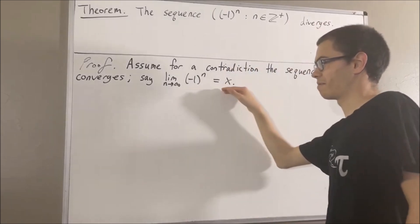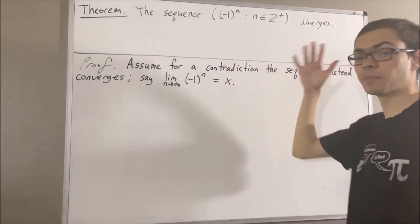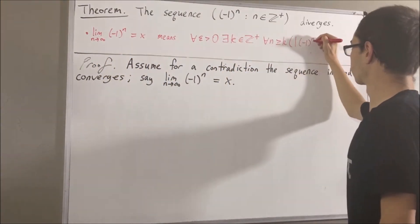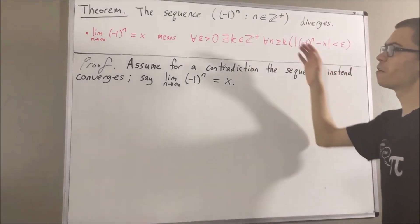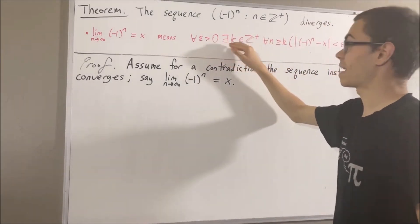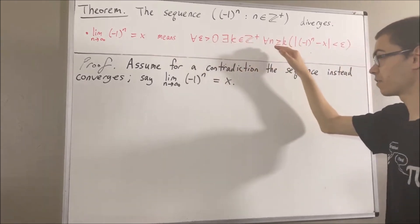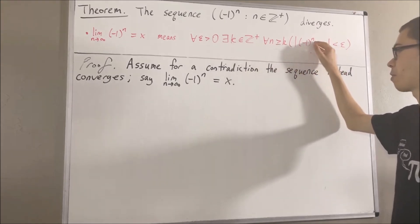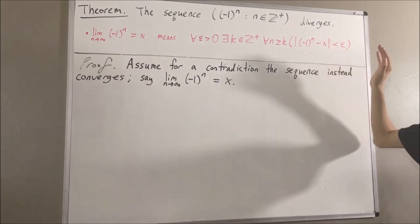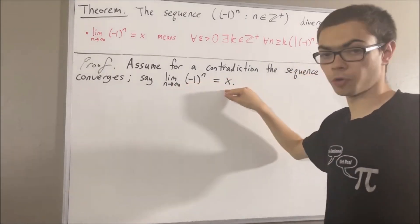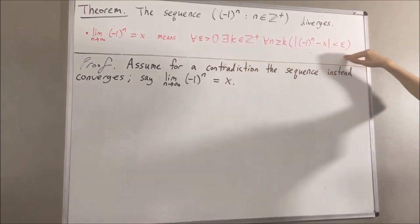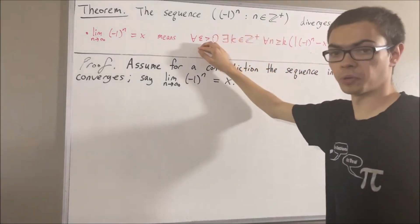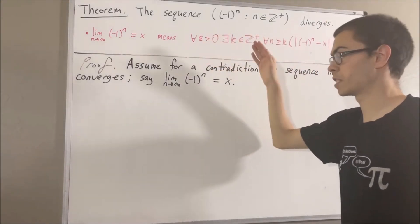Now, what does this mean? Well, by the definition of the limit of a sequence, it means the following: for every epsilon greater than 0, there exists a positive integer k, such that for all positive integers n greater than or equal to k, the absolute value of negative 1 to the power of n minus x is less than epsilon. Because this is true for every positive real number, in particular, it must work for the positive real number 1.